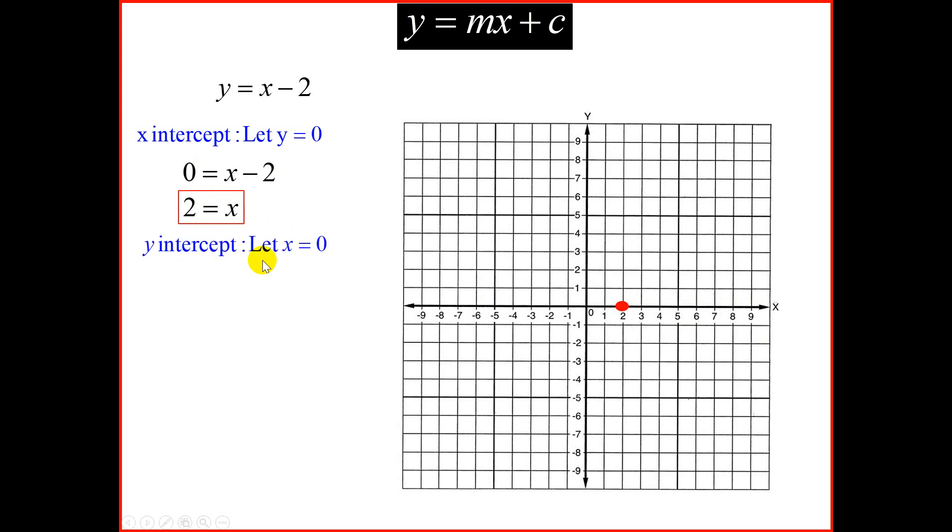Next, find the y-intercept. We let x equal to 0. So if we let x equal to 0, we will get y equal to 0 minus 2. Or remember, the negative 2, which is the constant, represents your y-intercept. So the y-intercept, the point where it cuts the y-axis, at minus 2, we'll place a dot.